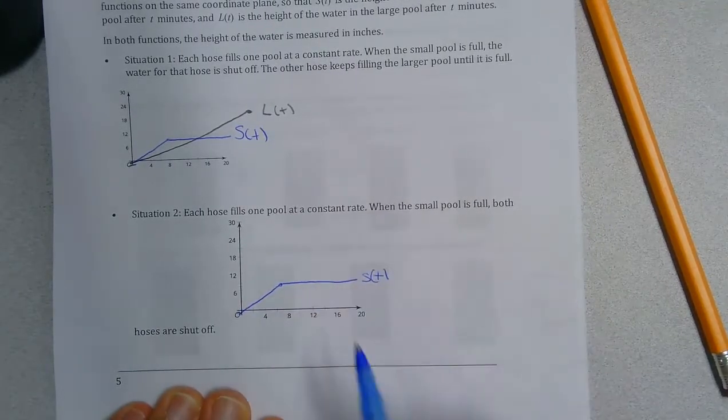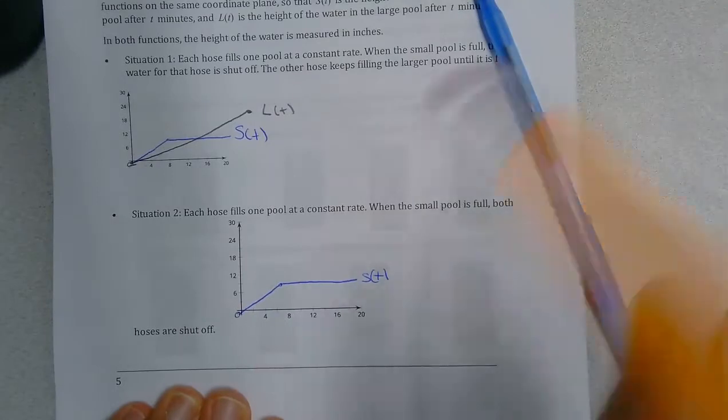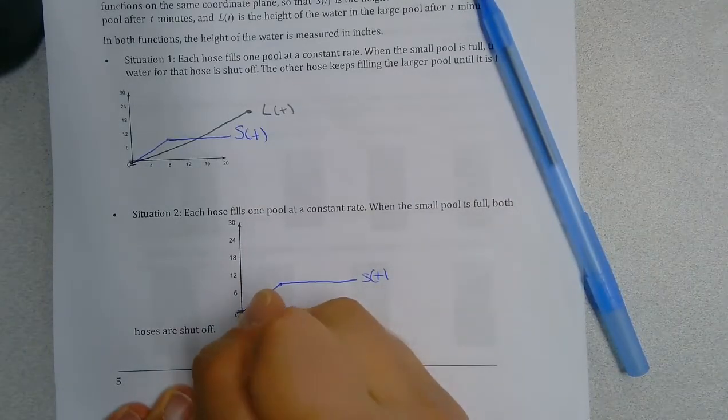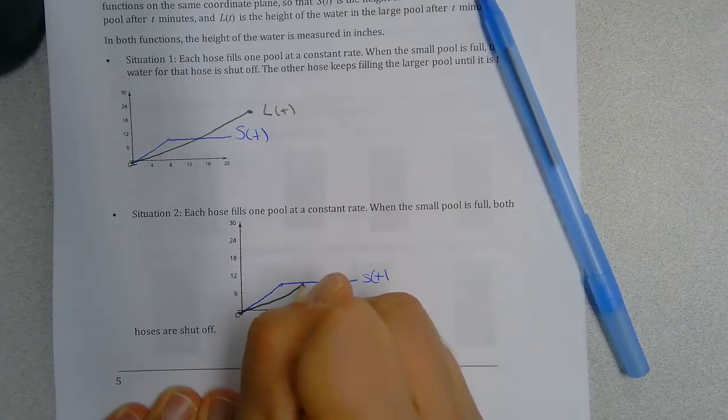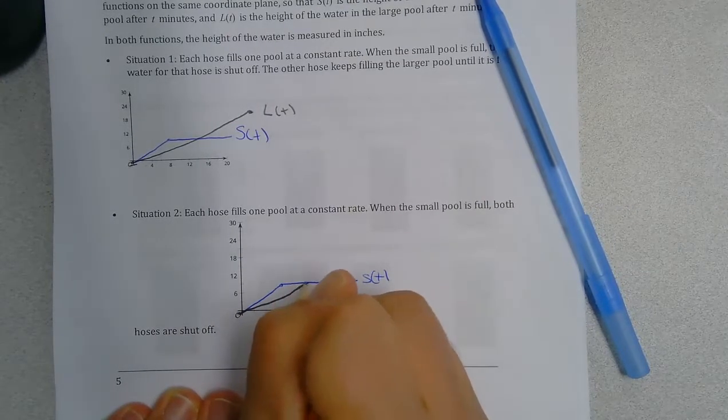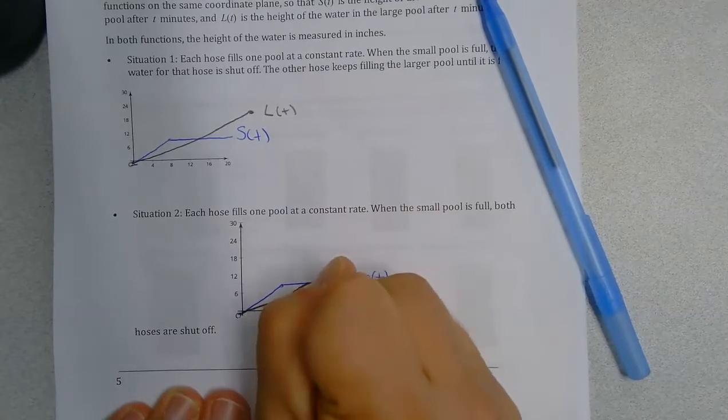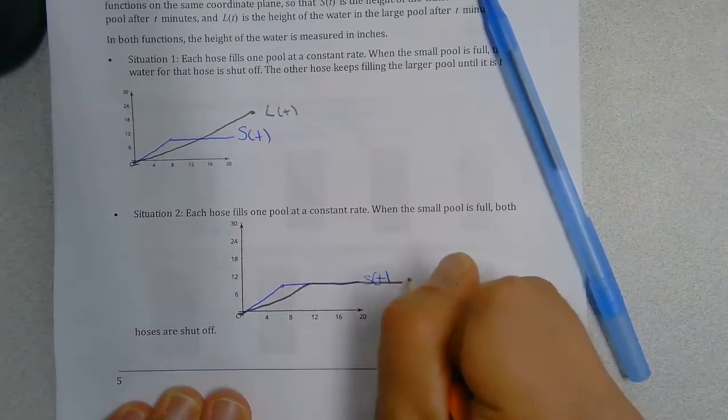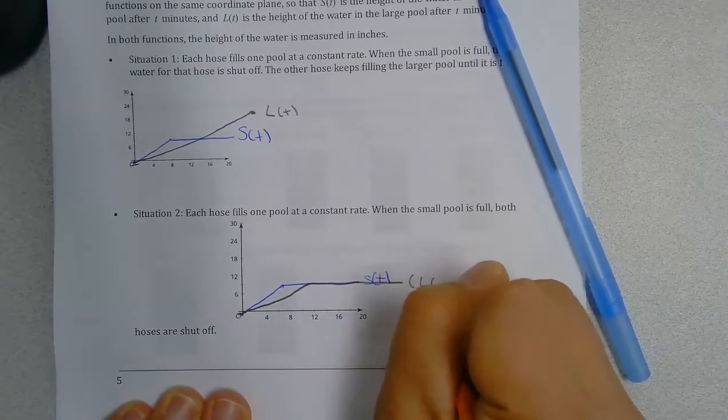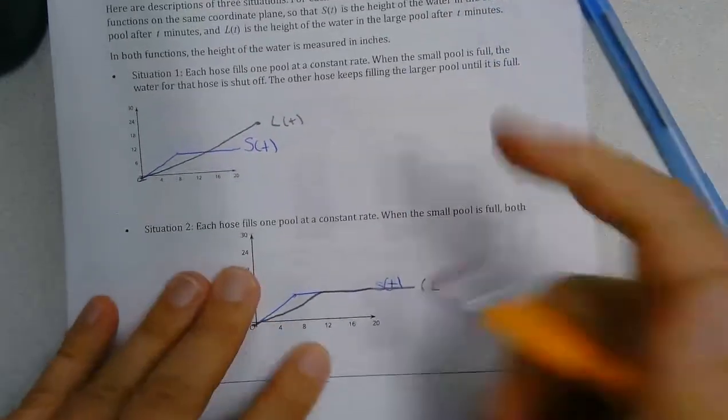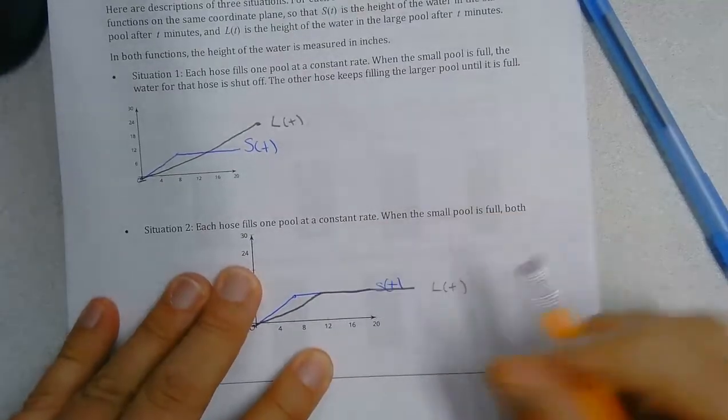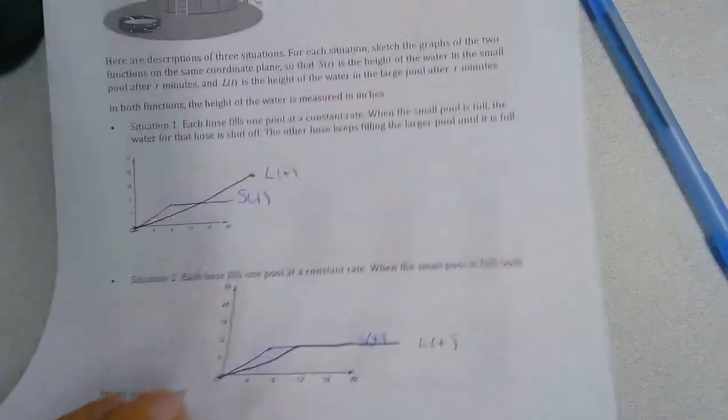Now how this one is different: the L of T pool is getting filled, but the height increases at a smaller rate because it's wider. It then just stops. Both are shut off, so this height stays constant for L of T. Let me erase that part, I didn't need that parentheses.